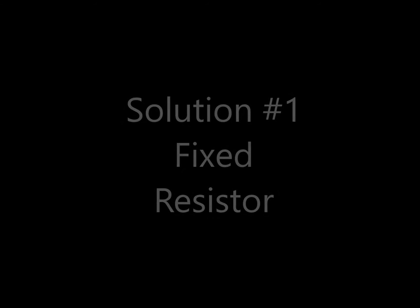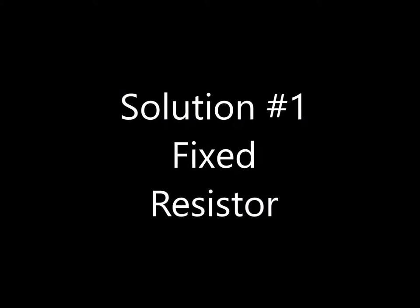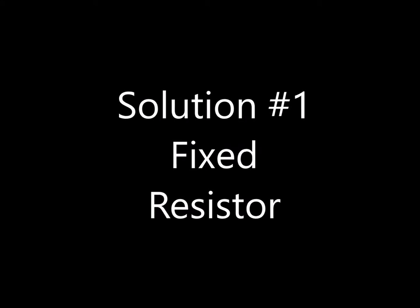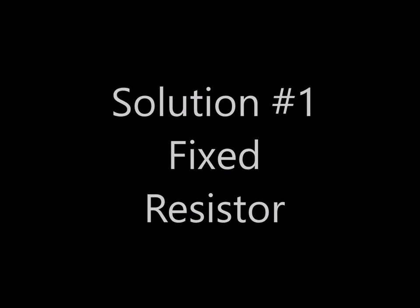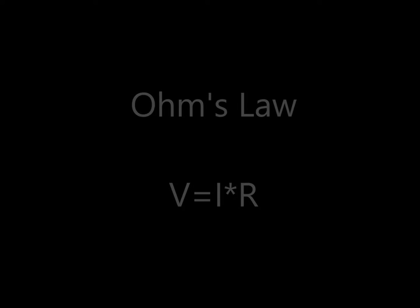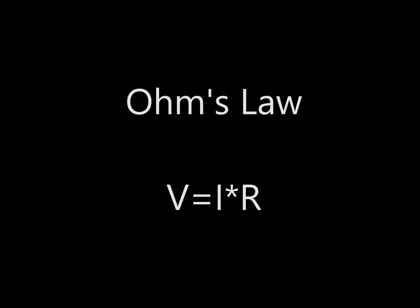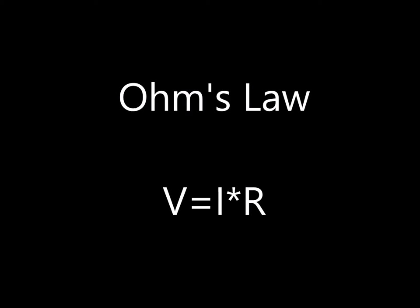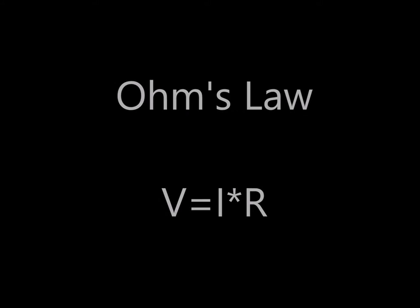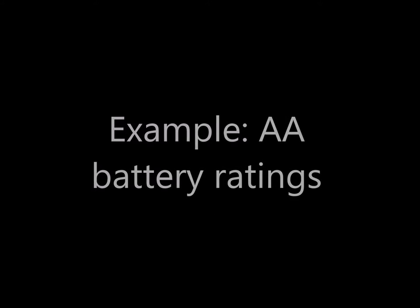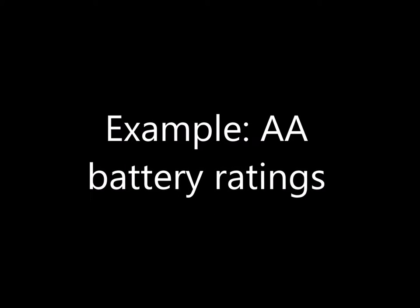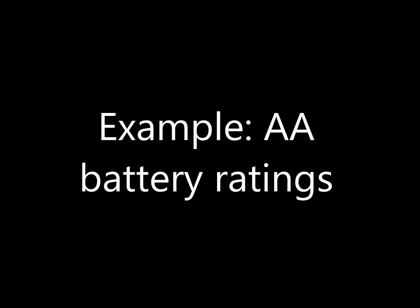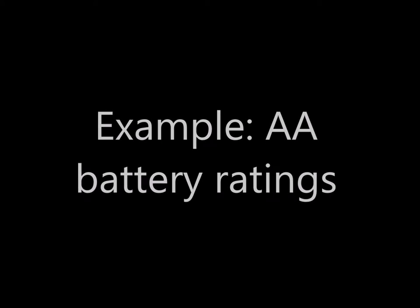One obvious way to check a power supply or battery's capacity is to use a fixed resistor. Of course, this is where our old friend Ohm's law comes into play. The voltage is the product of the current times the resistance. Let's take a look at a typical AA battery and see what its ratings are and what resistance we would need to test that battery.